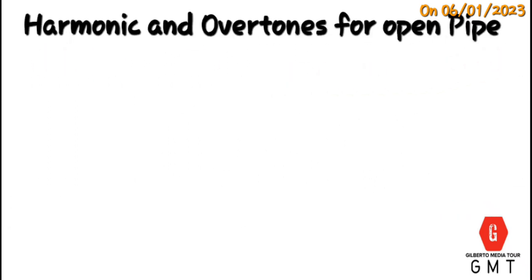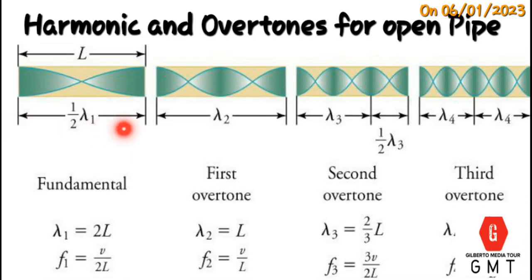Harmonics and overtones for open pipe. Fundamental frequency is the lowest frequency of the tube for open pipe, where the wavelength λ1 equals 2L and frequency f1 equals velocity over 2L.